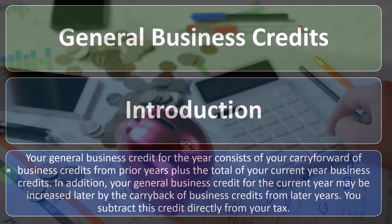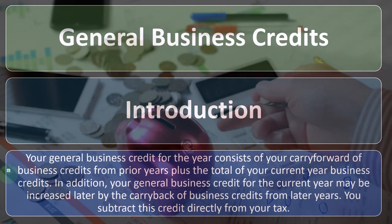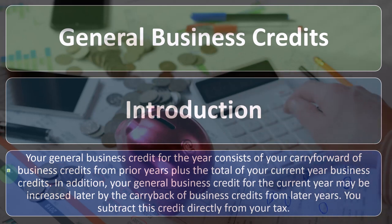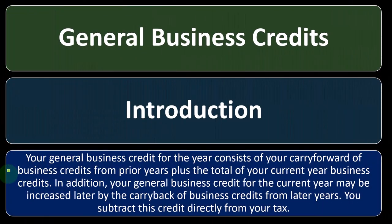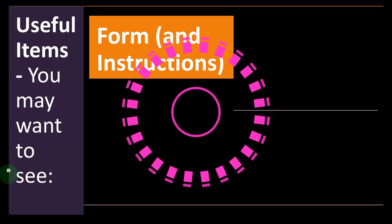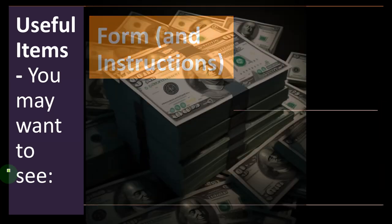Your general business credit for the current year may also be increased by the carry back of business credits from later years. If you're not able to get a benefit in the current year, you can carry it back to a prior year or carry it forward to a future year. You subtract this credit directly from your tax — credits are different from deductions in that they provide a dollar-for-dollar benefit. If you had a dollar credit versus a dollar deduction, you would want the dollar credit generally because you get the full dollar benefit of it.